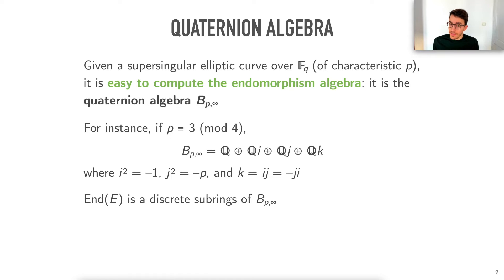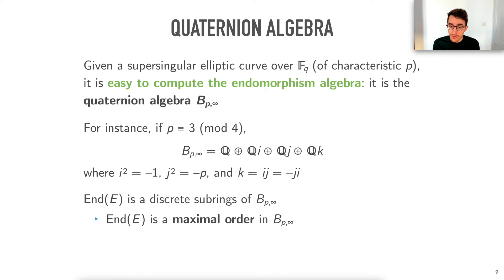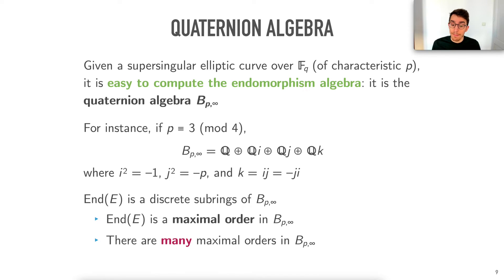We understand perfectly the endomorphism algebra — it's easy to compute. What we're interested in is the endomorphism ring, which is a discrete subring of the endomorphism algebra. It's not just any discrete subring: it is maximal, meaning it is a discrete subring not contained in any bigger discrete subring. We call it a maximal order of the quaternion algebra. Unfortunately, the quaternion algebra has many maximal orders, so we cannot simply enumerate them.